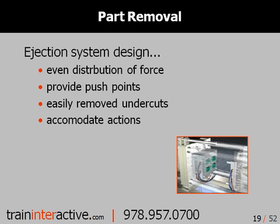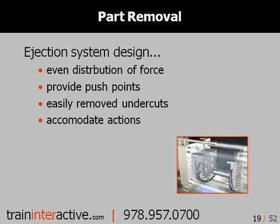When ejecting any plastic part, it's imperative that you distribute the ejection force as evenly as possible. Remember, you need to overcome the force of friction and vacuum when you eject. Your part design must provide enough area to allow some type of mechanical mechanism, like a pin or a stripper ring, to positively move the part away from the core. When you have to deal with undercuts, be sure to position them in a manner which will best facilitate their removal during mold operation or part ejection. You must also allow enough space around the undercut for actions such as lifters and slides to properly move.